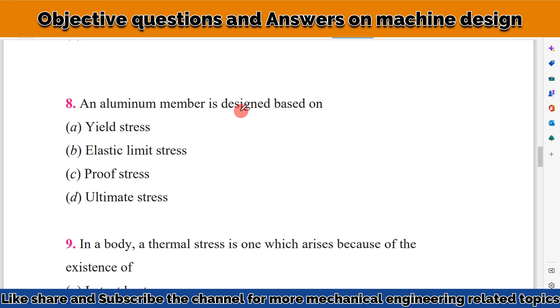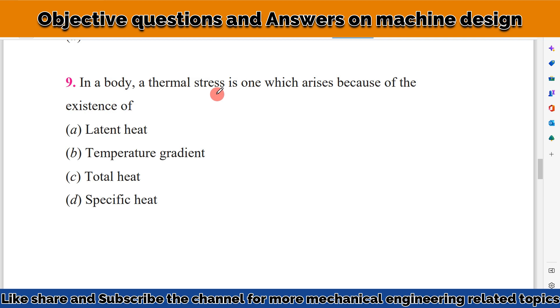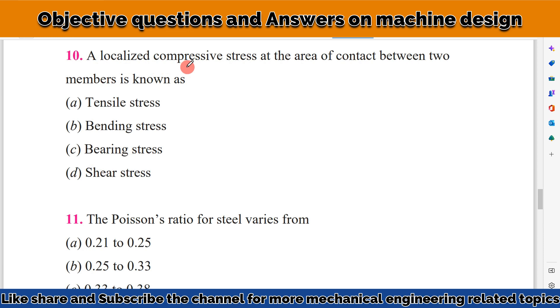An aluminum member is designed based on yield stress. In a body, the thermal stress is one which arises because of the existence of a temperature gradient. A localized compressive stress at the area of contact between two members is known as bearing stress.